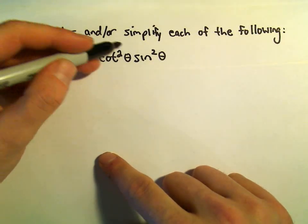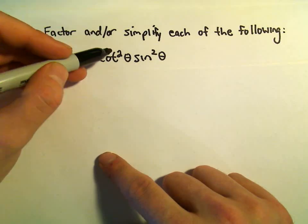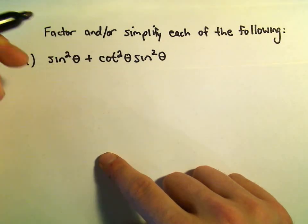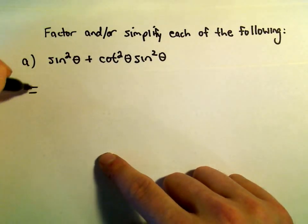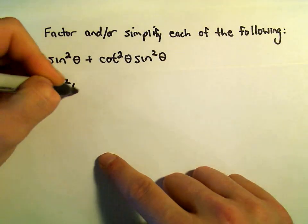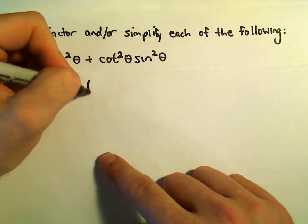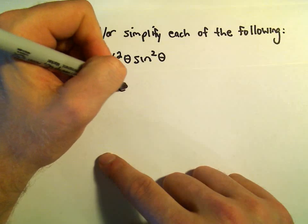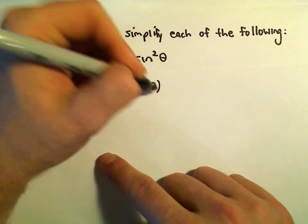You could even rewrite cotangent squared as cosine squared over sine squared, cancel, and use an identity. But let's use this idea of factoring. So we can factor out the sine squared theta, and then we would have 1 plus cotangent squared theta.